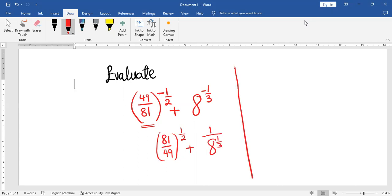We need to find the square root of this fraction. We're going to have the square root of this fraction here, 81 over 49, then plus 1 here over the cube root of 8. So what do we have?